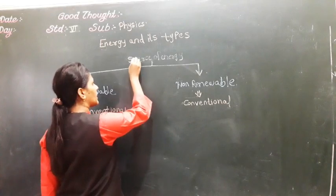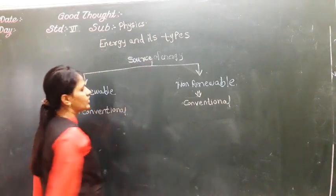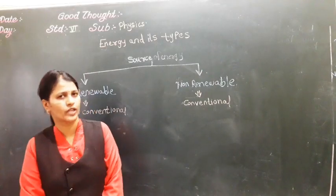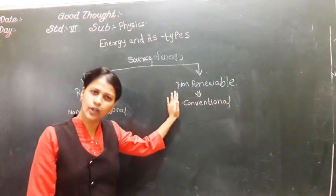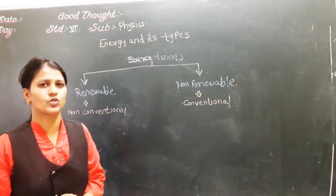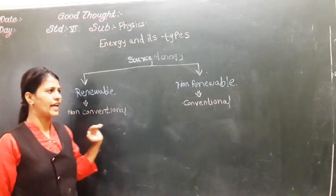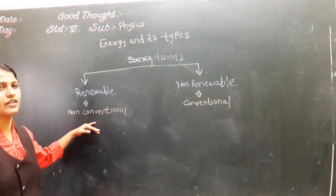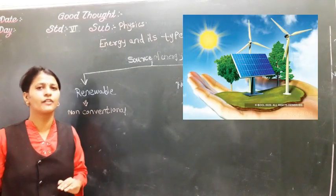Energy is mainly classified into two types: renewable and non-renewable sources of energy. Renewable source of energy is also called as non-conventional source of energy.